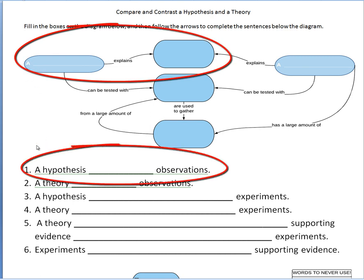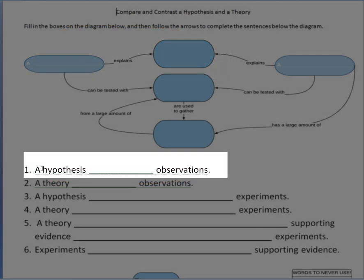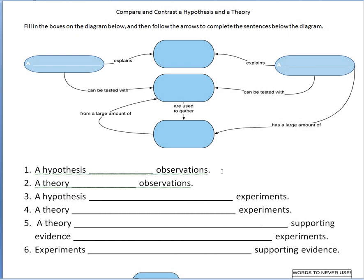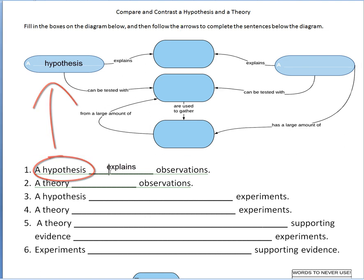this is the same as sentence number one, so a blank explains blank, or right here we have a hypothesis blanks observations. And all you really have to do is take this word from the arrow here, write it in the blank, take the other words from the sentence here, put it in the two boxes. So this one, we'll just do the first one for you. A hypothesis, that goes here, explains, that goes there, observations.